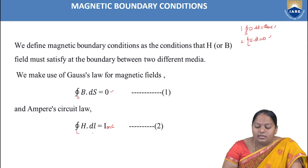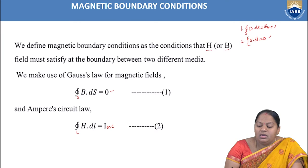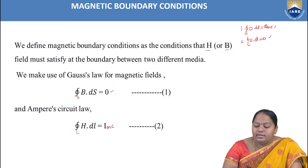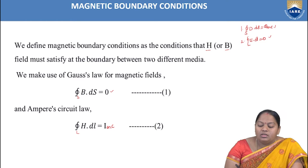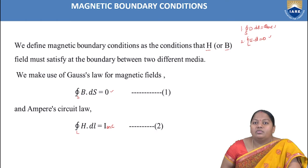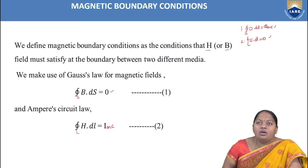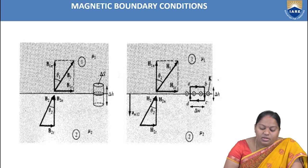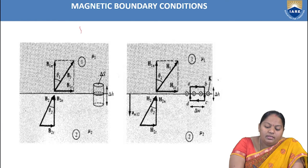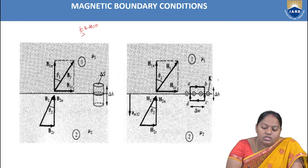We define magnetic boundary conditions as the conditions that the H field or B field must satisfy at the boundary between two different media. To apply the first Maxwell's equation ∮B·dS = 0, we use a Gaussian cylindrical surface placed at the interface. Applying this to the cylindrical surface gives one of the boundary conditions in magnetic fields.